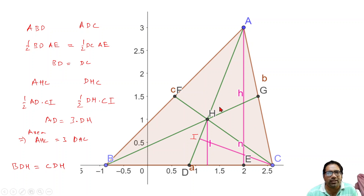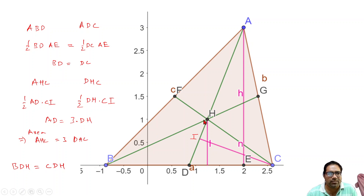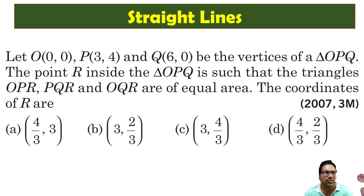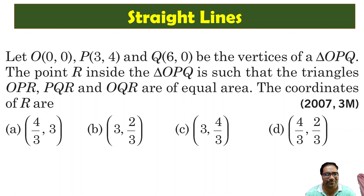All six parts have equal area. Pairs of these six parts combine to show that HAB equals HBC equals HCA. That's why the centroid divides the triangle into three equal areas. In this problem, the triangle is OPQ and R is the centroid. This basic high school geometry proof shows why the centroid divides the triangle into three equal areas.